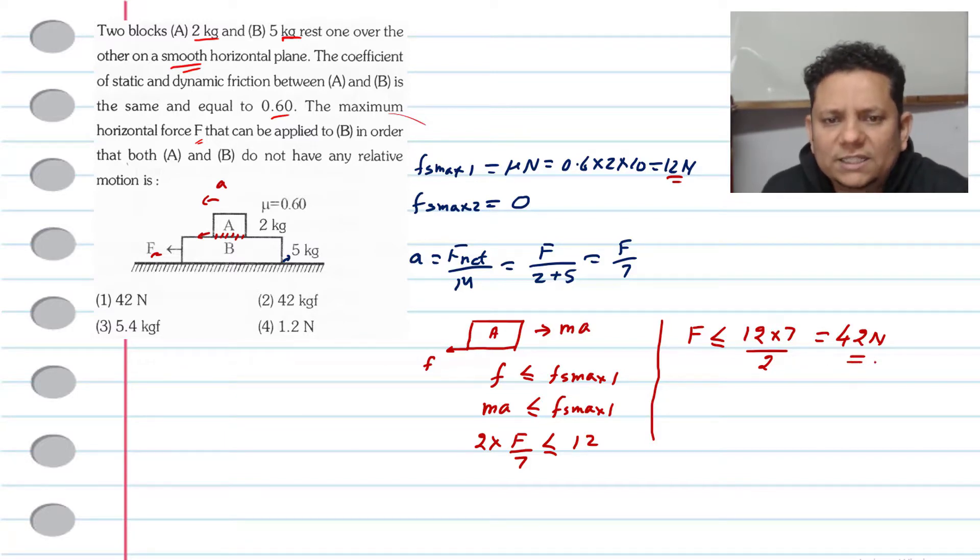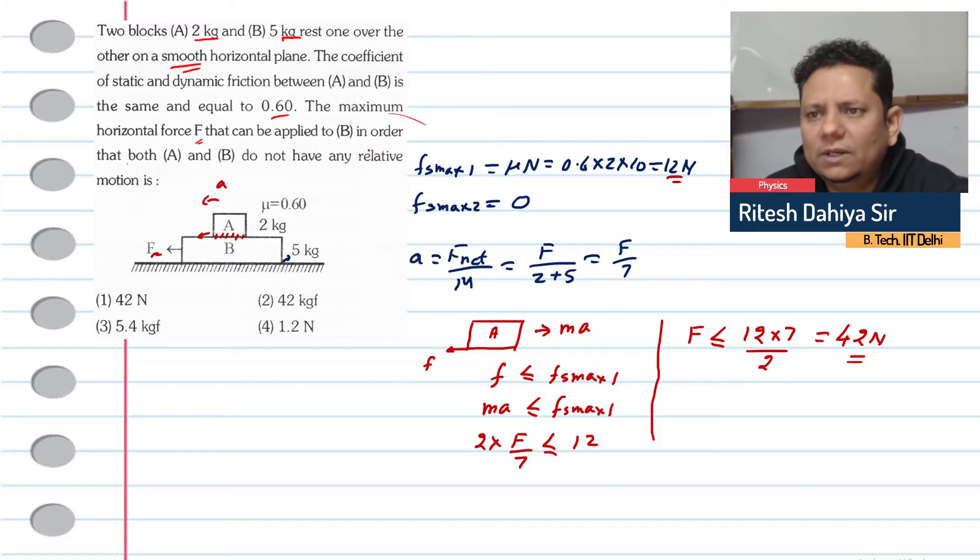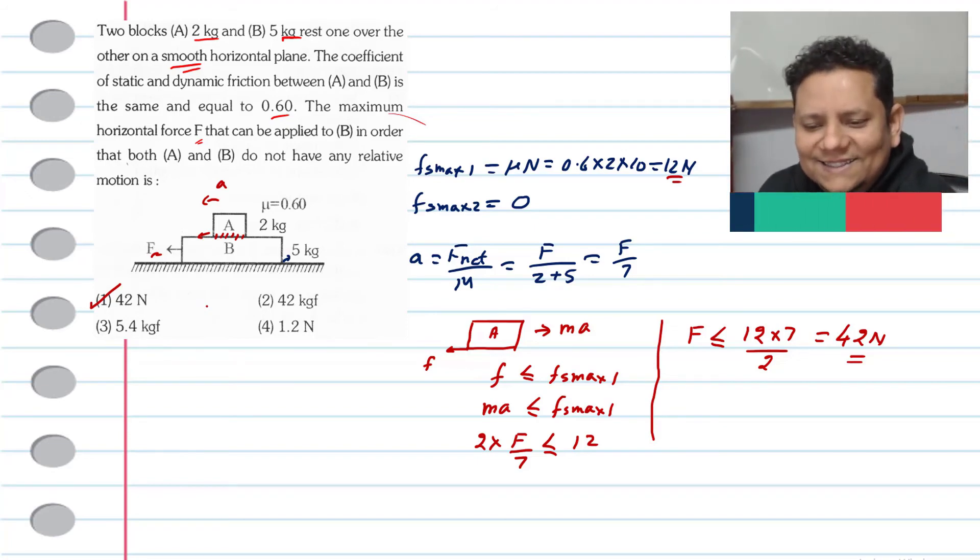If you apply more force, then the blocks will not move together. They will slip and have relative motion. So based on this, option number 1, 42 N, would be the right answer.